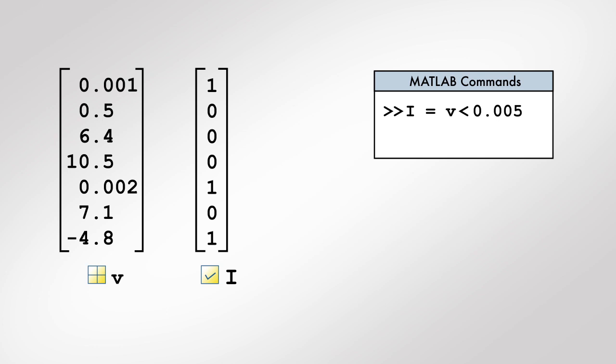We now use i to access specific elements of the array v. The syntax is similar to the one using the locations of elements to be extracted. However, in this case, instead of using the actual locations, we use the logical array i as an index. MATLAB uses i to extract the elements of v corresponding to the locations where i is true. The result is a numerical array containing only the elements of v that satisfy the criterion.